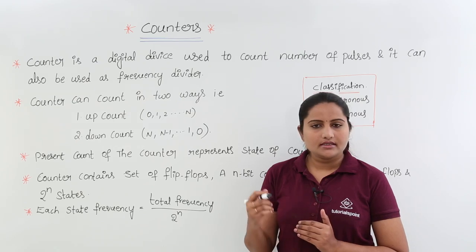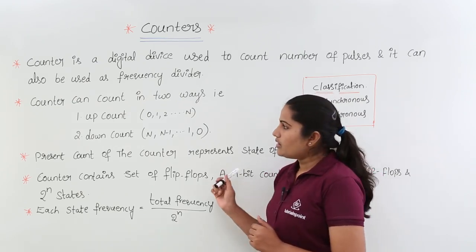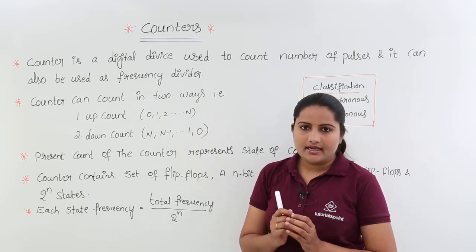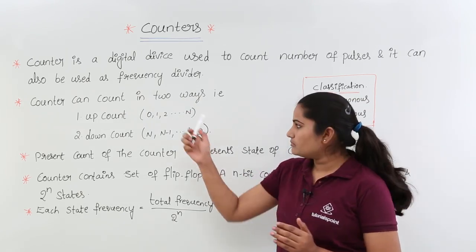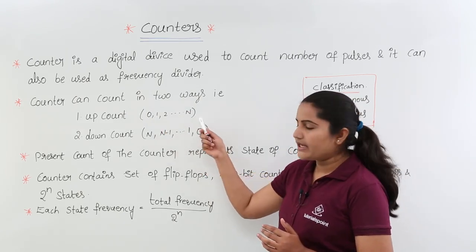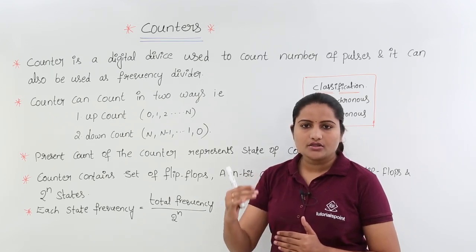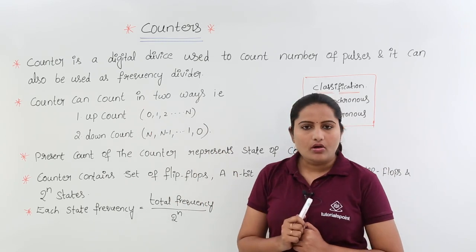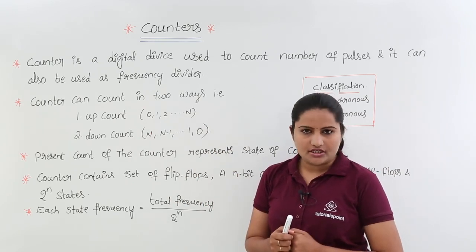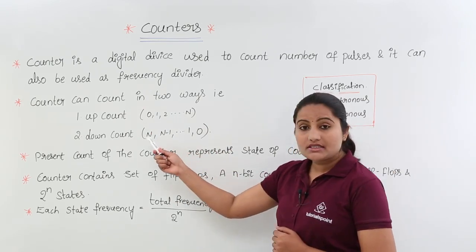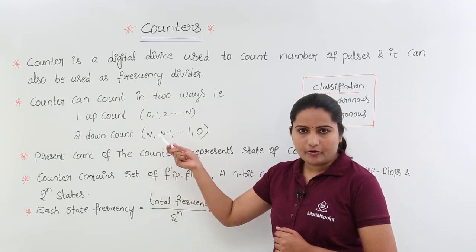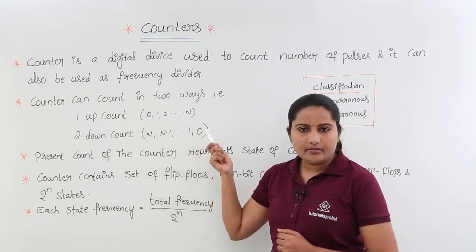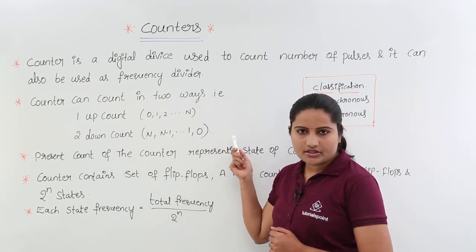The counter counts those clock pulses. A counter can count in two ways. It may count from 0 to n — that means 0, 1, 2 up to n — which is called up count. Or it may count in the downward direction, starting from n and decreasing like n, n minus 1, n minus 2, down to 1 and 0.